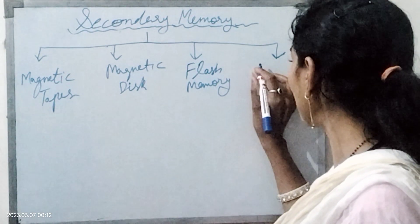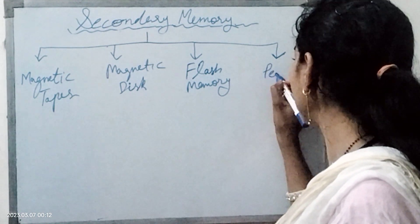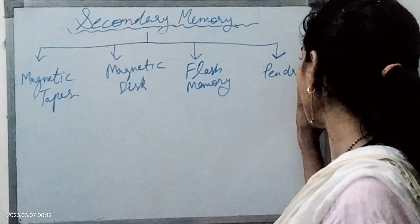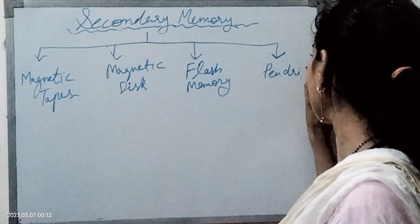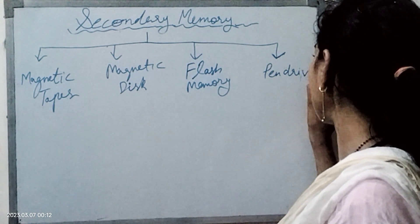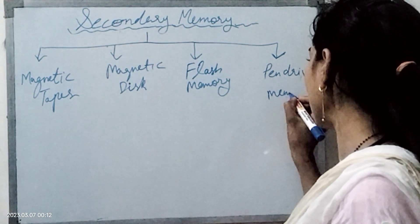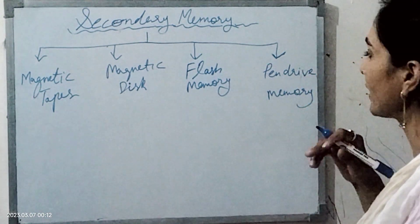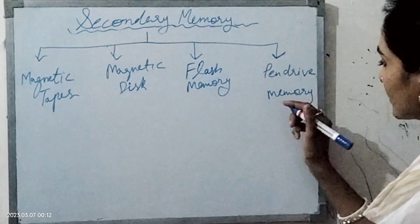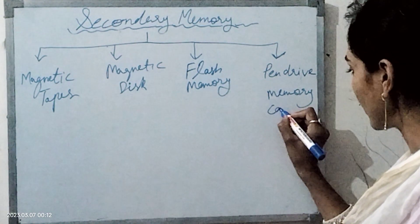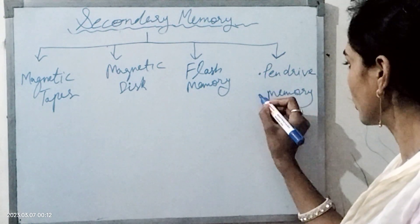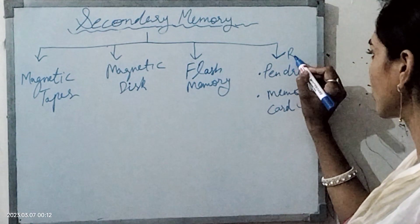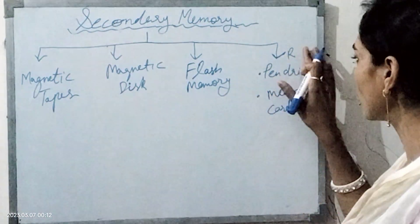Where does a pen drive go? Pen drive is one type of flash memory. Flash memory includes memory card, pen drive, and memory card. This is also a removable device.